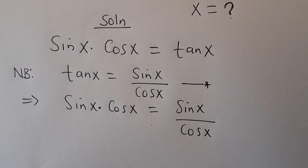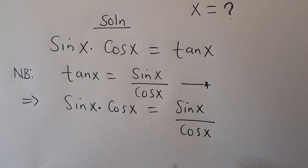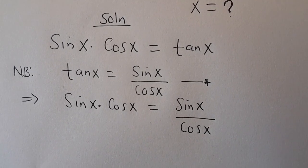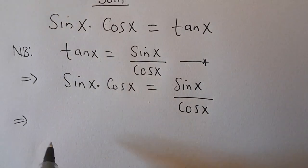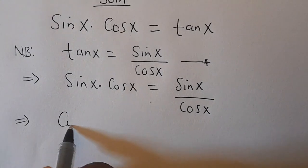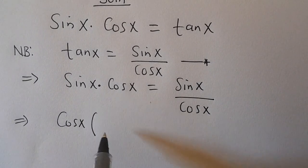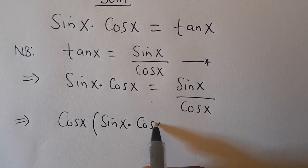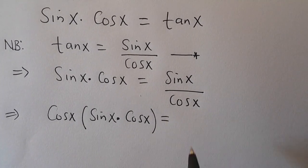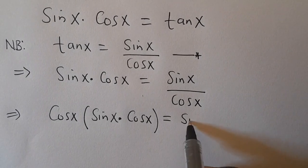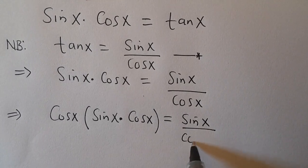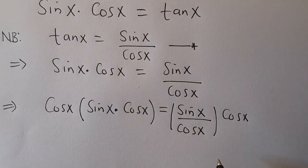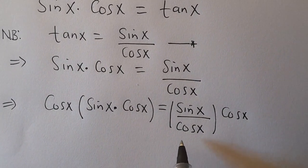Now the next thing is we want to eliminate cos(x), so by multiplying through by cos(x). This implies that we are going to have cos(x) multiplied into the brackets: sin(x)·cos(x) on the left-hand side equals sin(x) divided by cos(x), all in brackets, then multiplied by cos(x). So this cos(x) cancels.